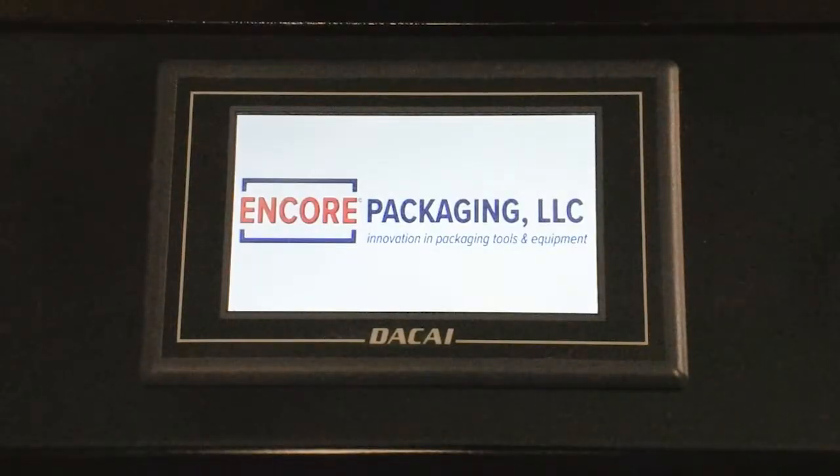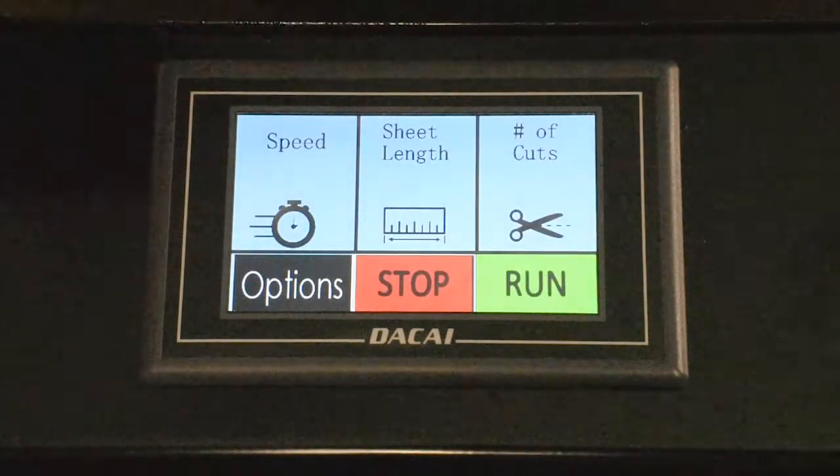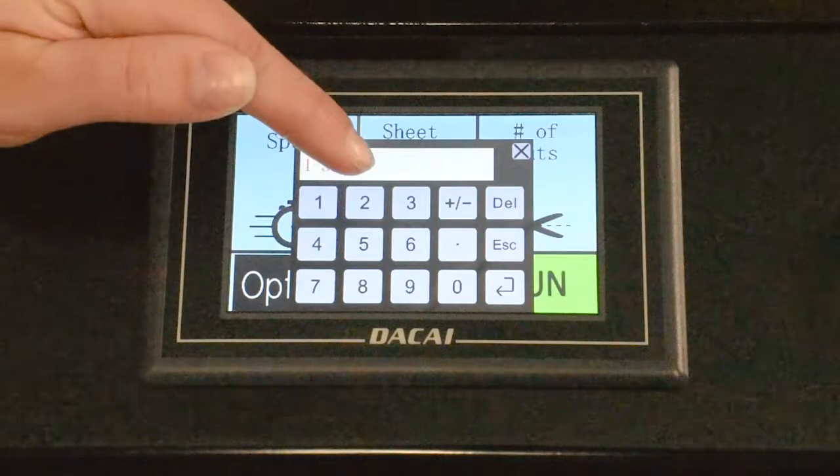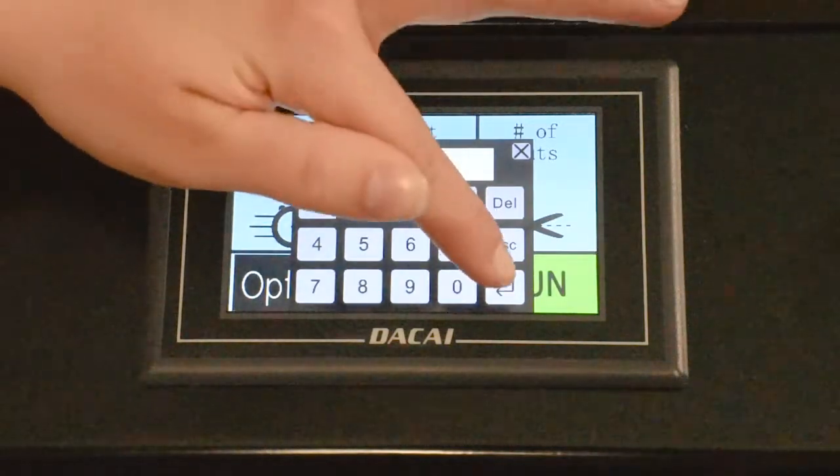Once your paper is loaded, tap the screen so the options for speed, length, and number of cuts appear. Tap each category, input a desired number, and press the return button.